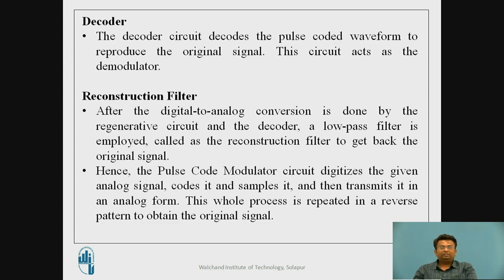After the digital-to-analog conversion done by the regenerative circuit and decoder, a low-pass filter is employed called a reconstruction filter. The pulse-coded modulator circuit digitizes the analog signal, codes it, samples it, and transmits it. This whole process is repeated in reverse to obtain the original signal.